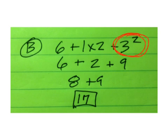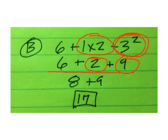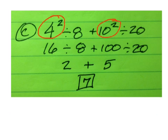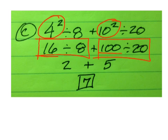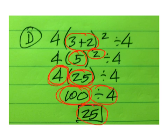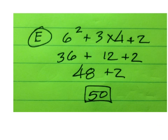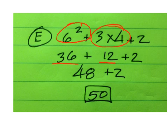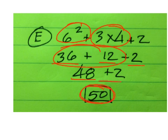On B, you have to square the 3 to get 9. 1 times 2 is 2. Go left to right to get 17. Then square the 4 and square the 10 to get 16 and 100. Go back and do this to get 2 and 5 — that's why the answer is 7. Go to the parentheses to get a 5, square it to get 25, times 4 is 100. Divide by 4 and get 25. Last one: square the 6 to get 36, 3 times 4 is 12, then do 36 times 12 first to get 48 plus 2 is 50.